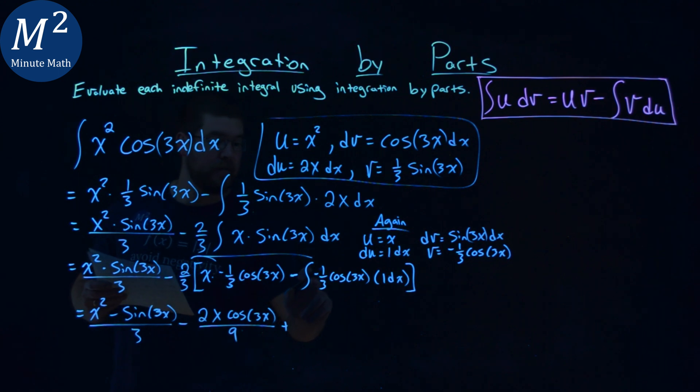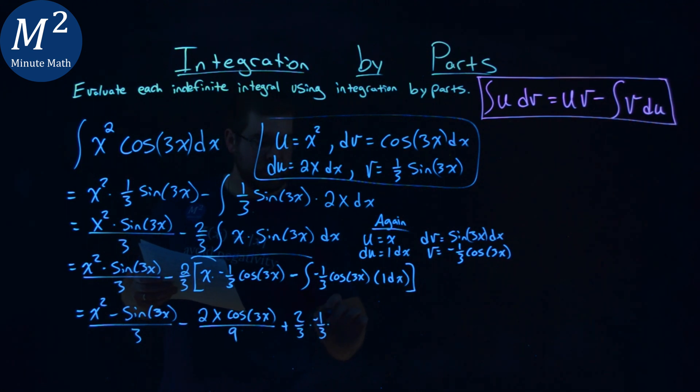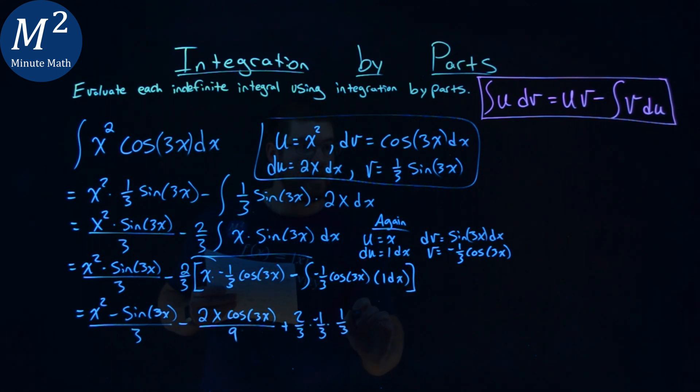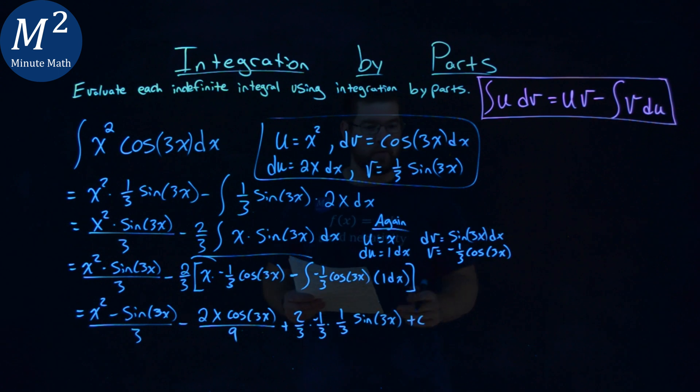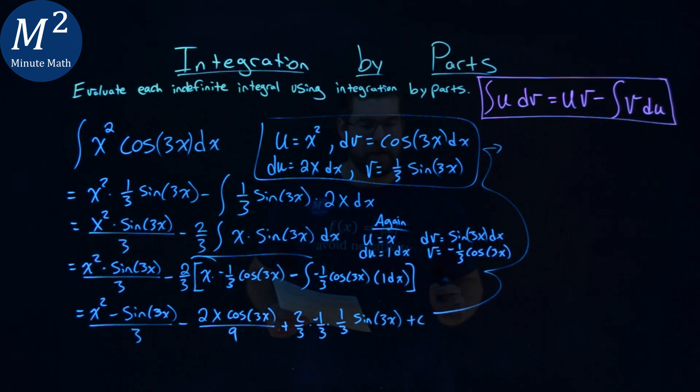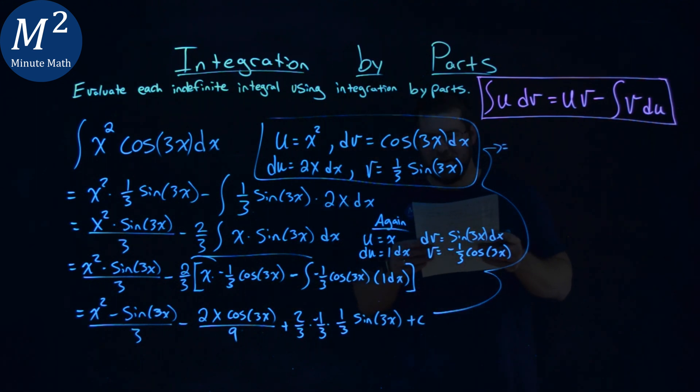Plus, I'm going to pull out that constant. Negative 2 thirds times a negative here is a positive 2 thirds. Then we're going to pull out that negative 1 third. The integral of cosine of 3x, we already found that, that is 1 third sine of 3x, and then we have a plus c. Let's see if we can fit it in up here.